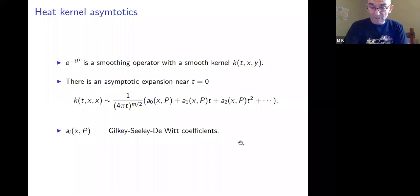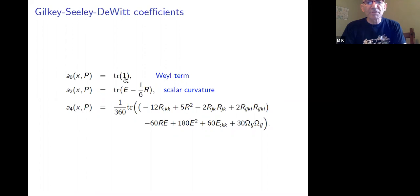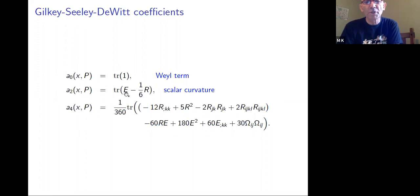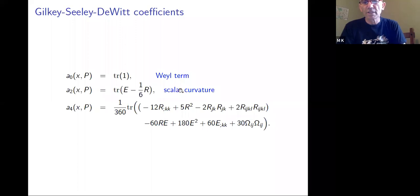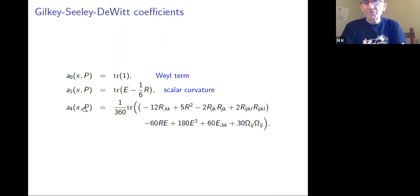The zeroth term is a trace of the identity of the bundle — this is the famous Weyl term that already gives you the Weyl result. The second one is a trace of this canonical endomorphism E of the bundle that emerges from the Laplace-type operator, plus R — the scalar curvature with values in that bundle. You take its fiberwise trace and you get A_2. That's really the first two that we need.